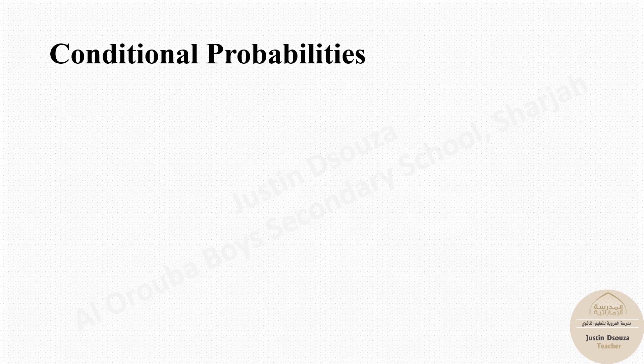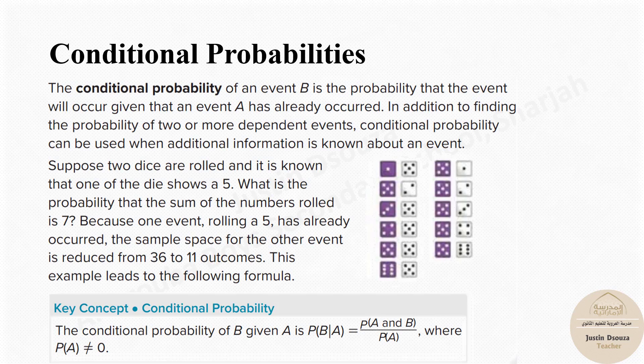You might have heard of conditional probability before, but what exactly does it mean? What does it imply? What's the condition? This is a very interesting concept — we know probability gives us the chance of something, but what if something has already happened and you are trying to predict the chances of the remaining outcomes? This is where conditional probability helps out.